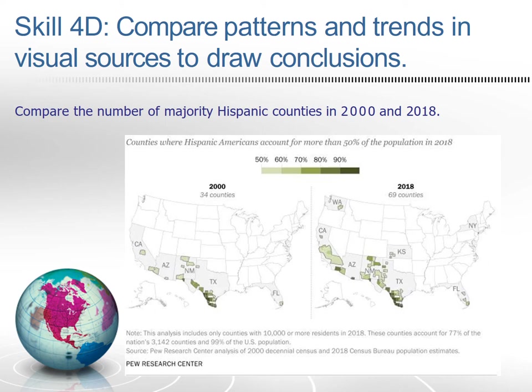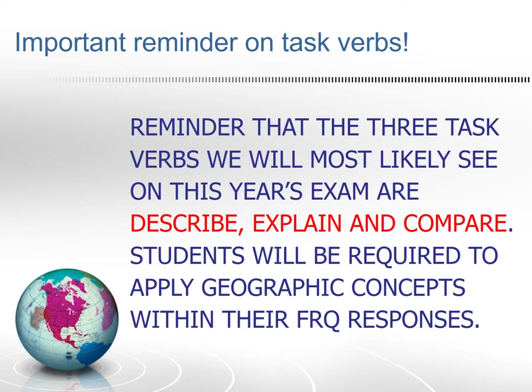Important reminder on task verbs: the three task verbs we will most likely see on this year's exam are describe, explain, and compare. Students will be required to apply geographic concepts within their FRQ responses. Within skill category four, there is also an identify task verb that students in future tests will have to be able to use as well, like what we saw in skill 4A.